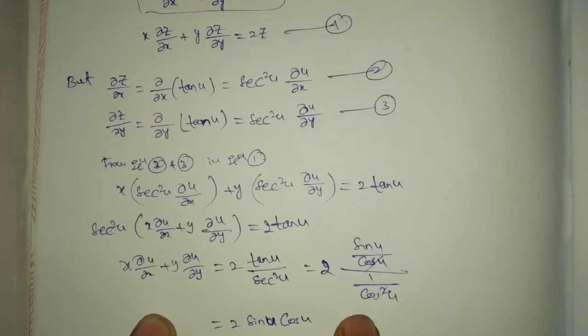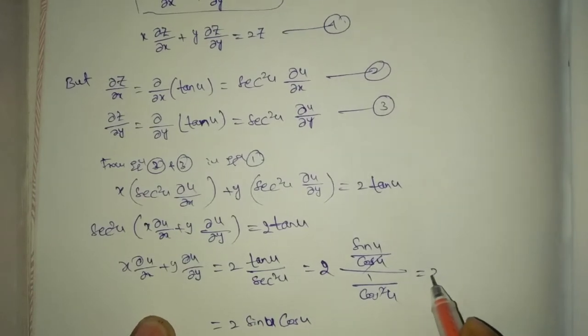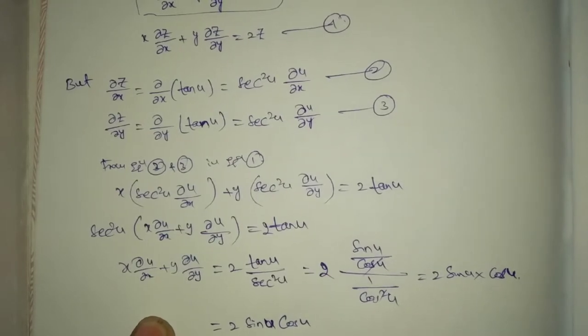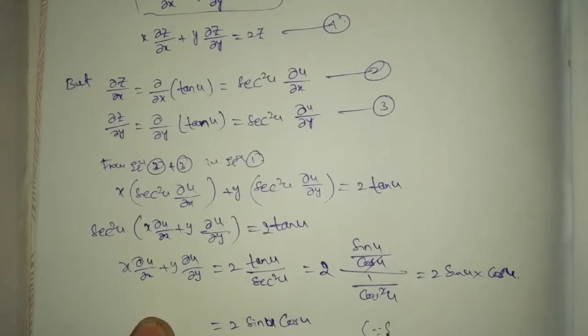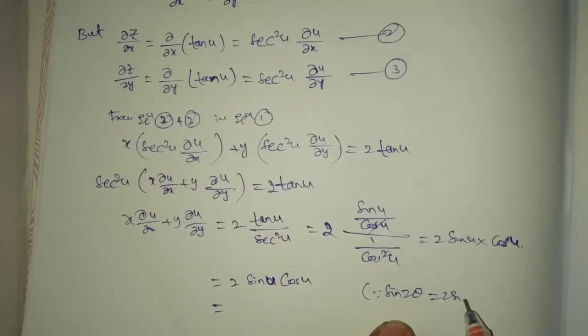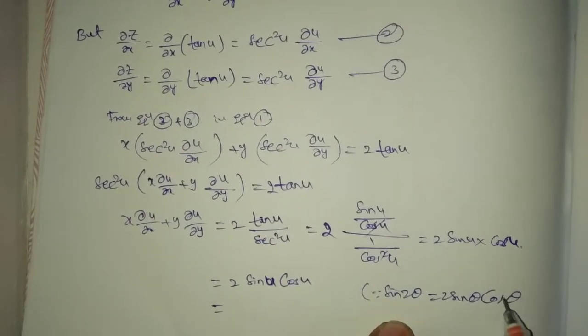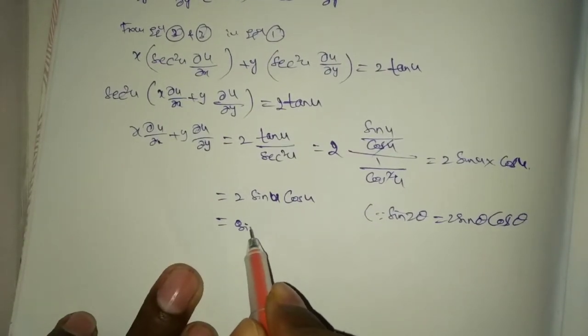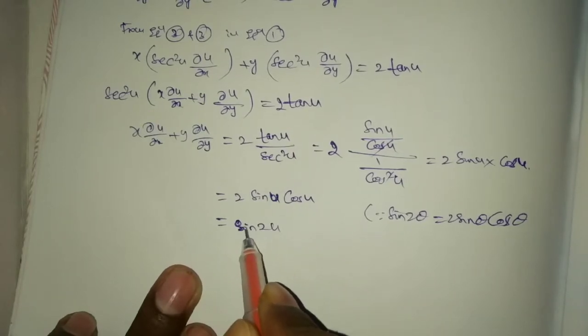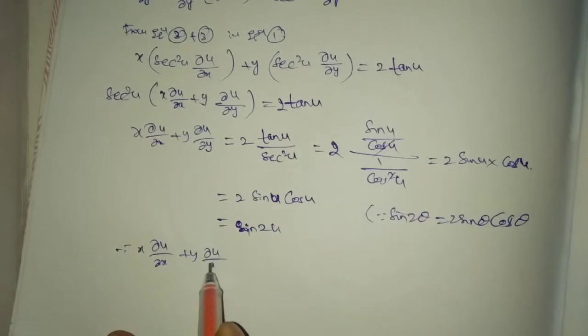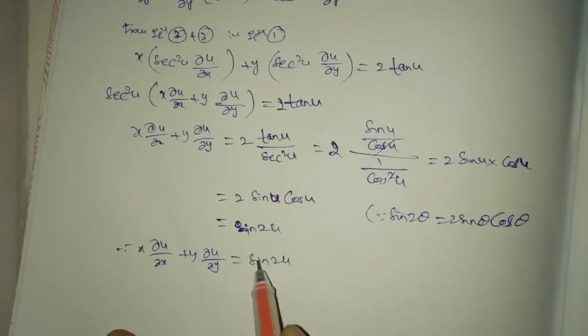2 sin u cos u. From trigonometry, sin 2 theta equal 2 sin theta cos theta. That equals sin 2 u. Therefore x del u by del x plus y del u by del y equal sin 2 u.